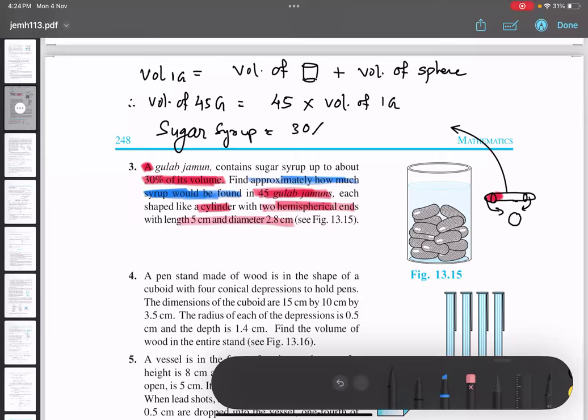In this question it is given the height, the length of full gulab jamun, 5 centimeter. I'll explain that also. So volume of 30% of volume of 45 gulab jamun, got it?